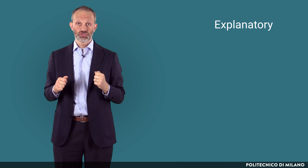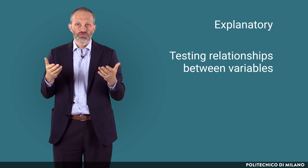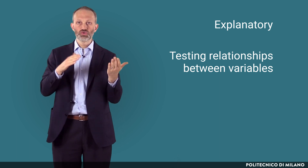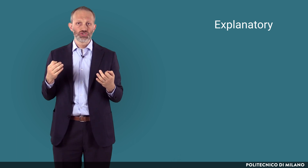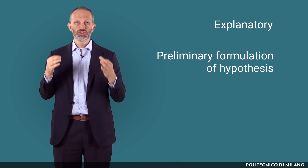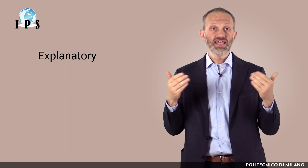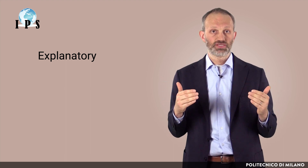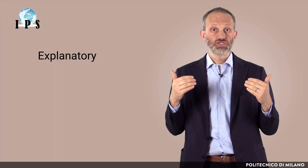Explanatory survey research aims to test relationships between two or more variables, therefore providing explanations for complex phenomena, such as cause-effect relationships and correlations. This is the typical aim of theory testing research, and requires a preliminary formulation of hypotheses based on existing knowledge, to be tested on a relevant empirical sample. The IPS project is a good example of explanatory survey research, since its aim was indeed to test on a large sample several theories about purchasing and supply management, by investigating complex relationships among multiple variables, leveraging on previous research in the field.